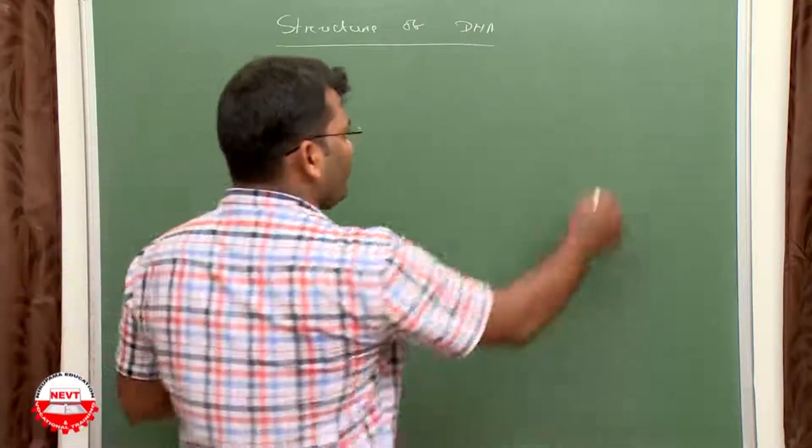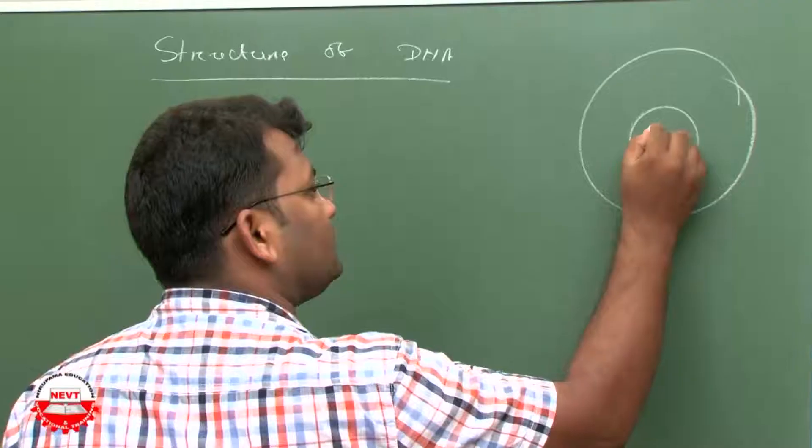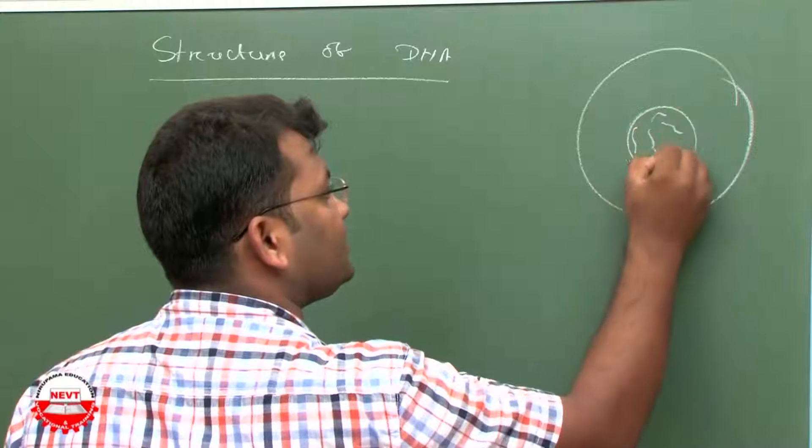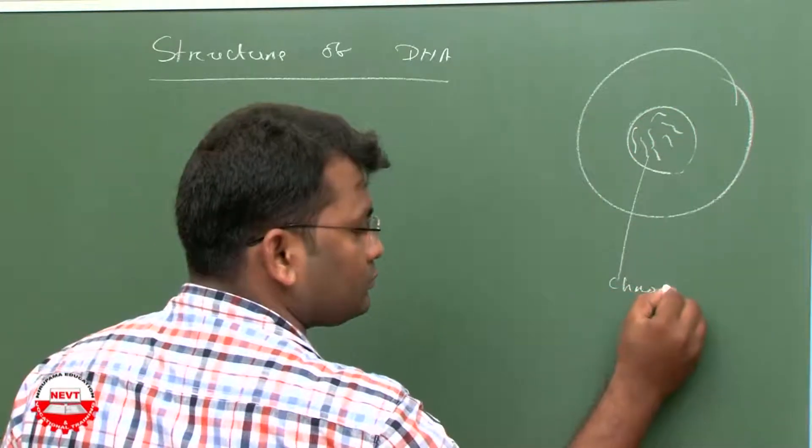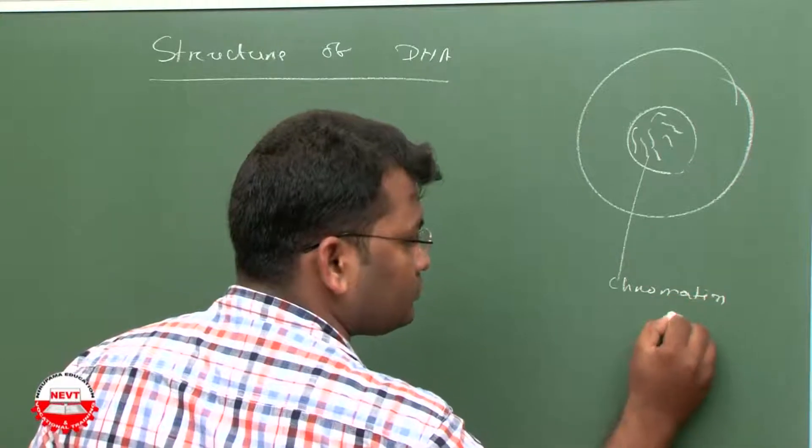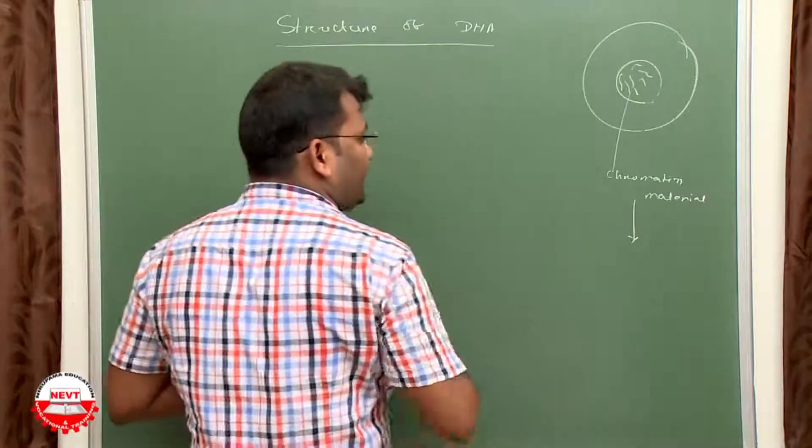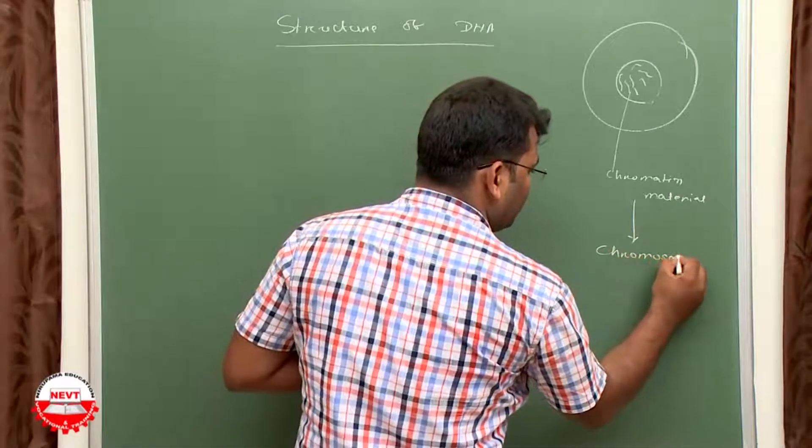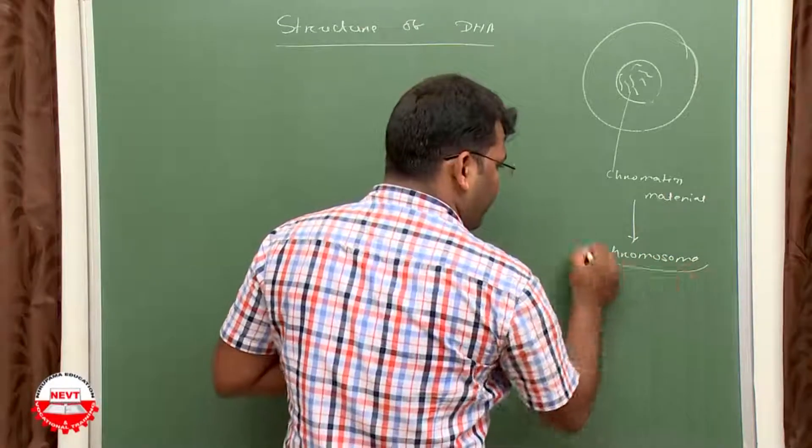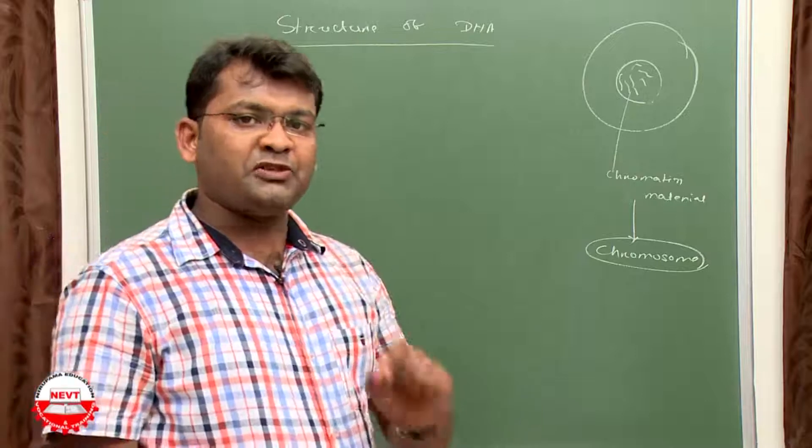The nucleus contains a thread-like substance called chromatin material. During cell division, chromatin material condenses to form chromosomes. The number of chromosomes is fixed for a specified organism.